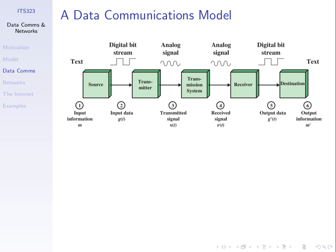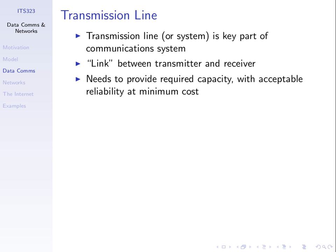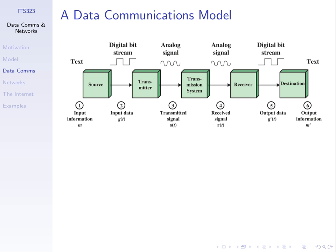Our source generates data viewed as a sequence or stream of bits, one bit followed by another. The transmitter takes those bits and, in this example, converts them into some analog signal. My email from my laptop needs to be sent to the wireless LAN access point — the wireless LAN transmitter takes those bits and creates a radio signal, electromagnetic waves which propagate through the air. The receiver does the opposite, converting the signal back into bits. The link between transmitter and receiver is the transmission system, sometimes referred to as a transmission link or transmission line.